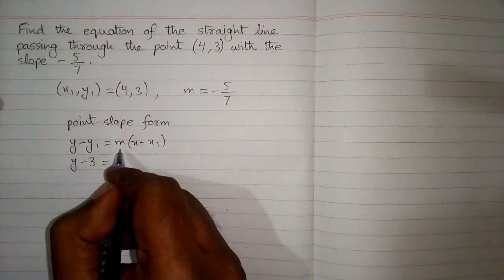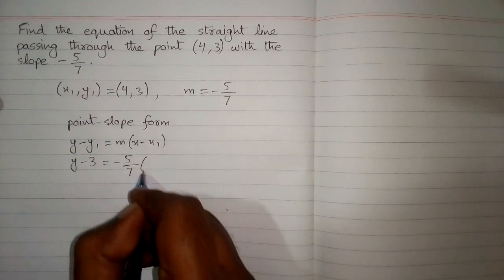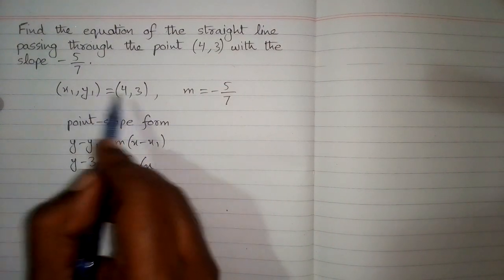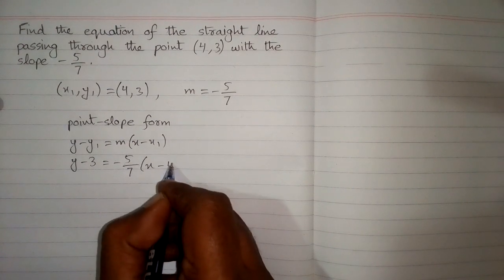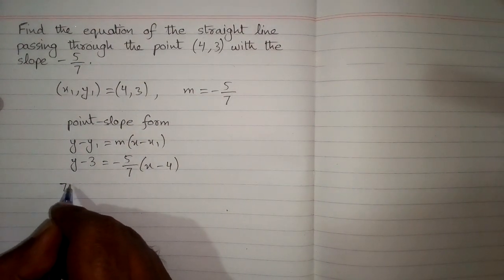minus 3, and then the value of m is -5/7, and then we put the value of x1, which is 4. Now we can take this 7 on this side of the equation, so 7 will be multiplied by (y - 3), and on this side we have -5 times (x